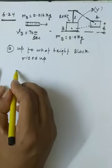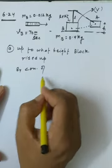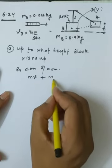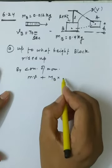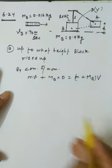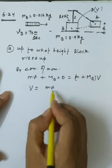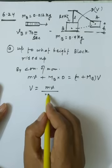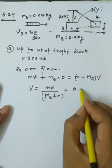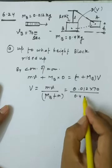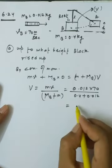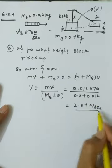By conservation of momentum: m·u + M·0 = (m + M)·V_final. So V_final = m·u / (m + M). Substituting: V_final = (0.012 × 70) / (0.4 + 0.012).